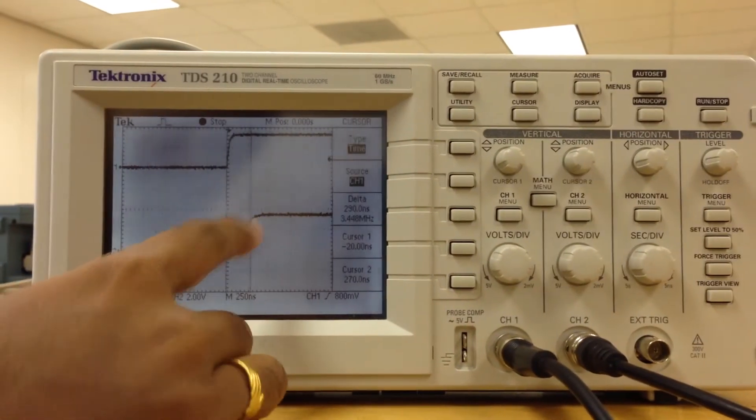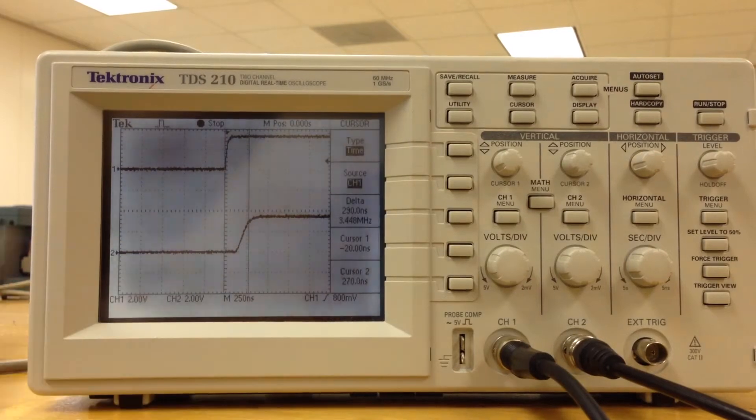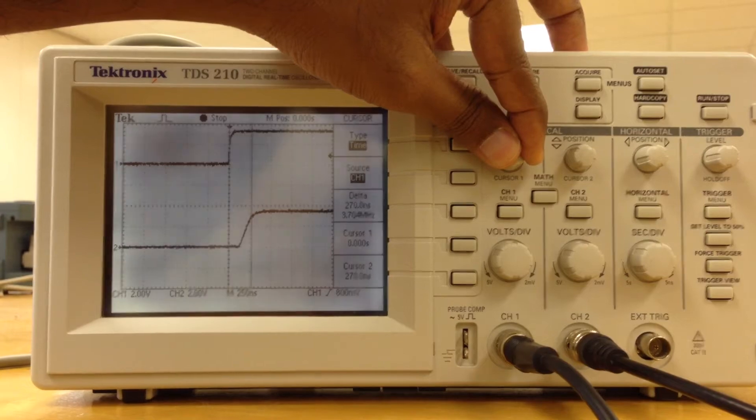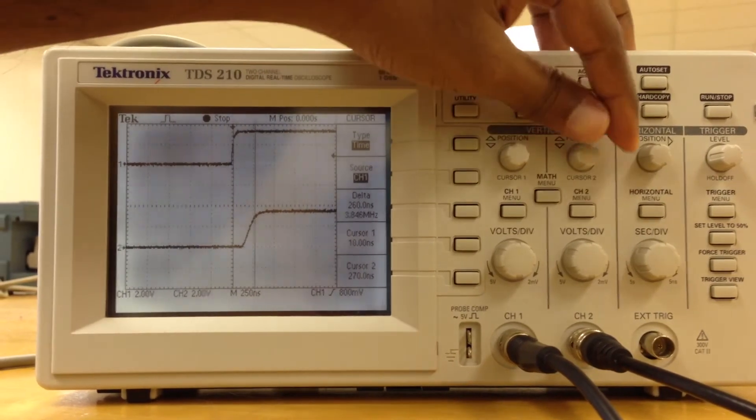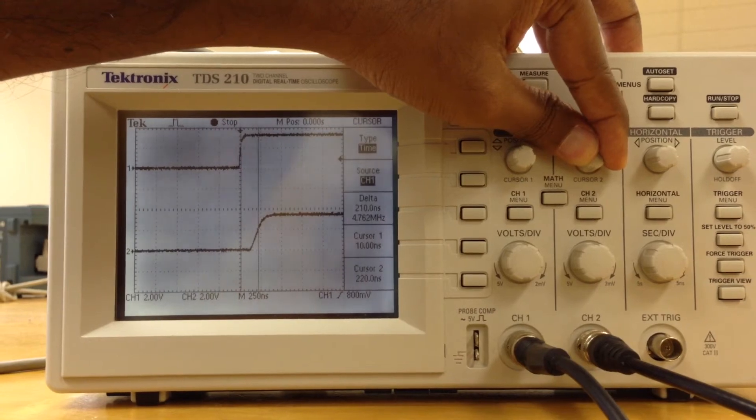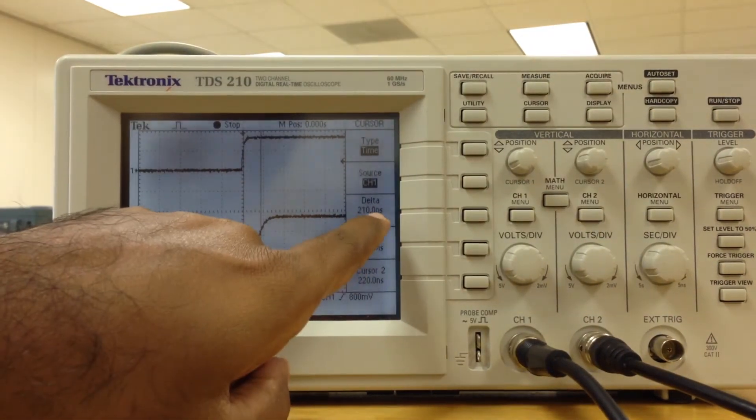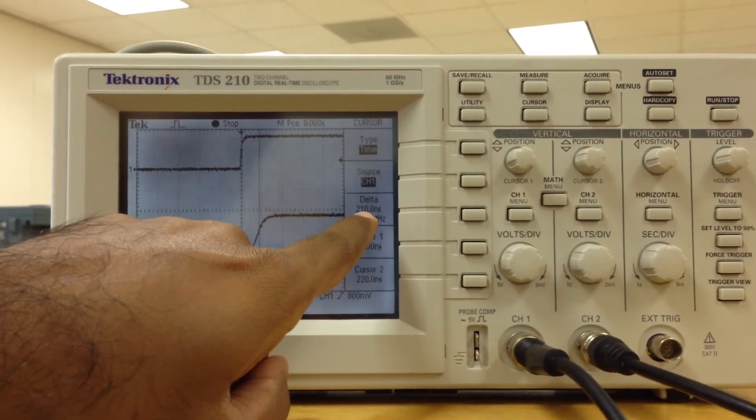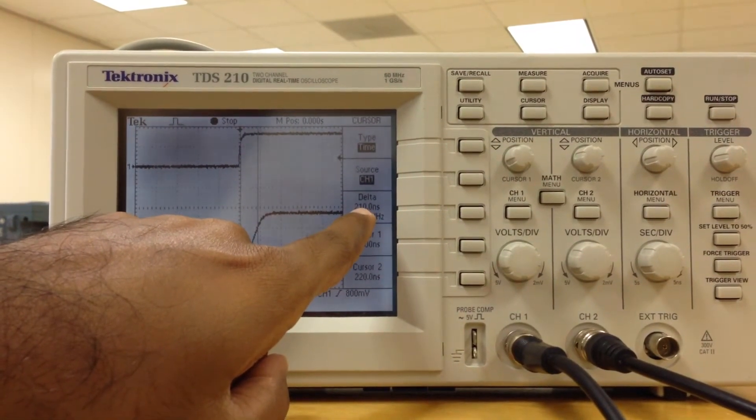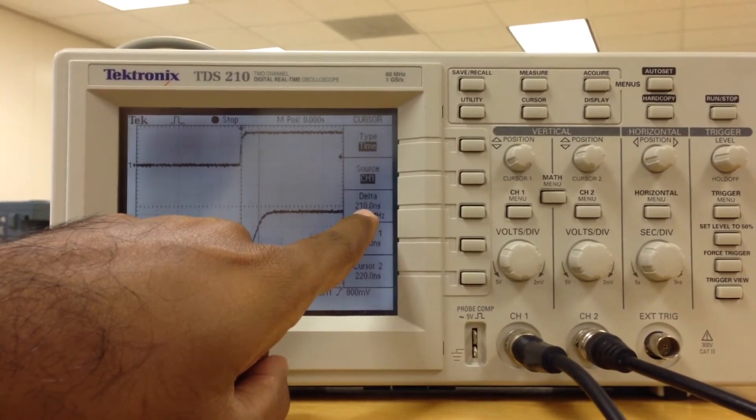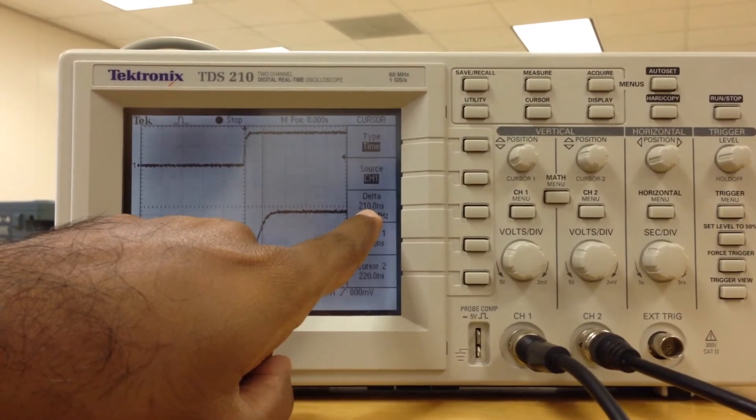I keep this position at the middle of the rise of clock, and I keep this at the middle of the rise of the output. As you can see, the delta is the time difference, which is 210 nanoseconds here. In your experiment, this need not turn out to be 210 nanoseconds; it can be a different number.